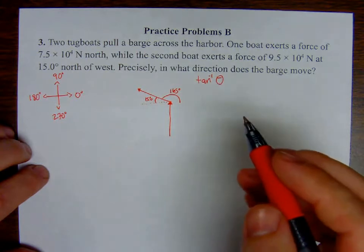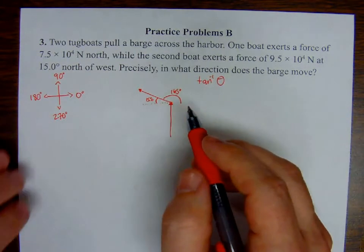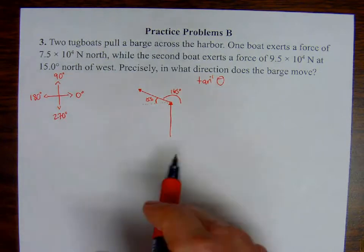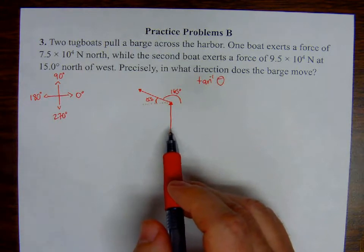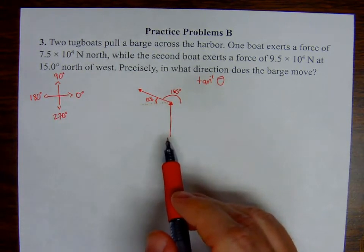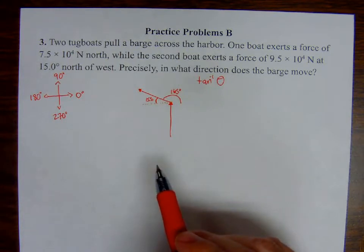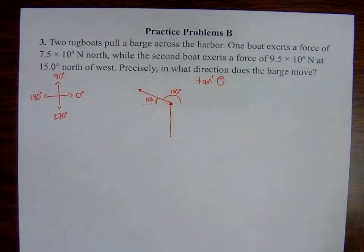So I'll have two x components. I'll add those together for my resultant x component. And then I'll also have two y components, and I'll add those together for my resultant y component. Once I have two kind of net x and y components, I can treat that like my triangle. And then I can calculate my direction. So let's get started. Let's start with the x direction.